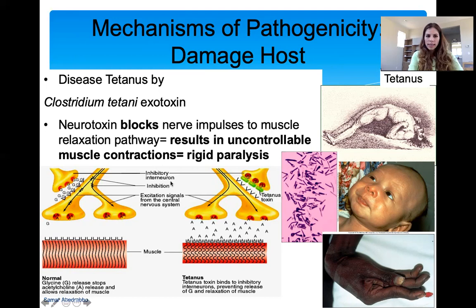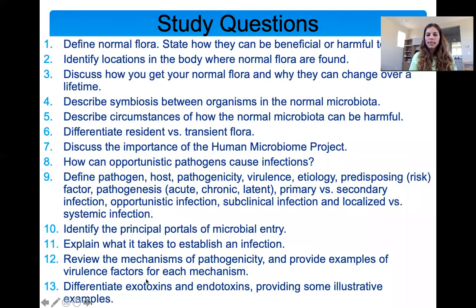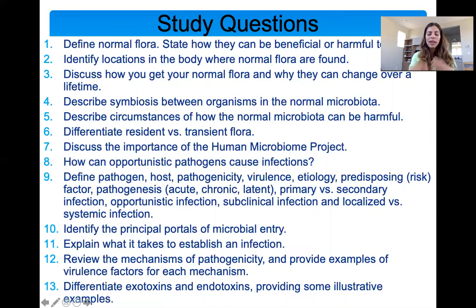This is the end of the lecture. From this lecture, I wanted you to understand the normal flora and how it can be beneficial. When is it harmful — when we see dysbiosis, overgrowth, or when flora moves to an incorrect location. We talked about resident and transient flora, opportunistic pathogens, and then mechanisms of pathogenicity: getting in, adherence, colonization, avoiding host defenses, and damaging the host. We ended by talking about exotoxins. It's a lot — I hope you take time studying this because it's very informative for your lives overall.